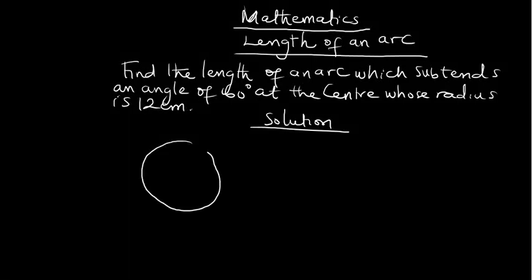When we are talking about length of an arc, if this is a circle and this is our center, this is our radius. This is the length of our arc. This is the minor arc, while this is the major arc.